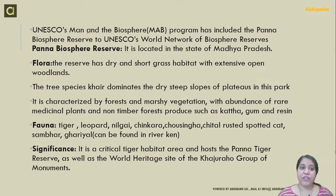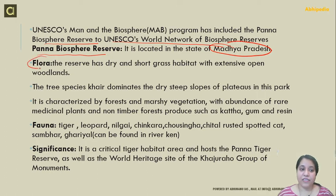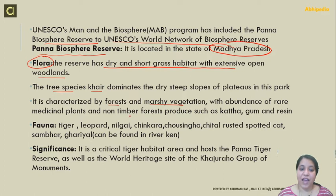Recently, the UNESCO Biosphere program has included the Panna Biosphere reserve in the UNESCO World Network of Biosphere Reserves. The Panna Biosphere reserve is located in the state of Madhya Pradesh. This area has dry and short grass habitat with extensive open woodlands, and tree species of Kher dominate the dry, steep slopes of plateaus in this park. It is characterized by forest and marshy vegetation with an abundance of rare medicinal plants and non-timber forest produce such as katha, gum, and resin.